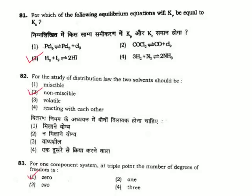Question 81: For which of the following equilibrium equations will Kp equal Kc — Kp equals Kc when the number of molecules of products equals the number of molecules of reactants. Equation 3: H₂ + I₂ → 2HI — 2 molecules react to form 2 molecules, so Kp = Kc.